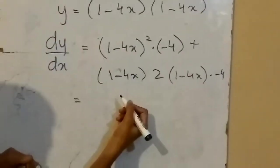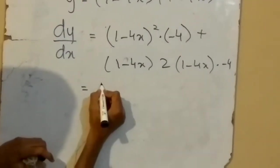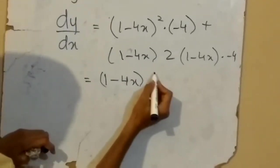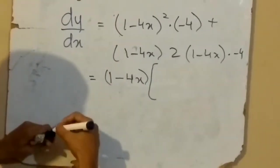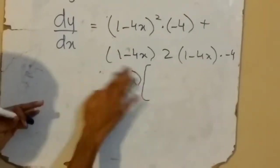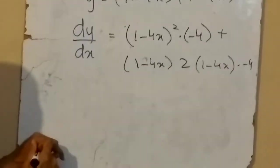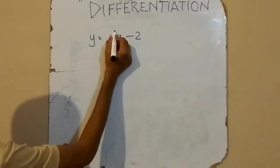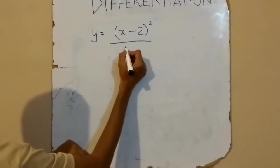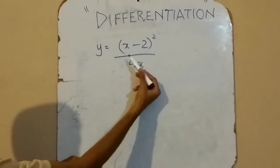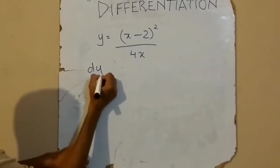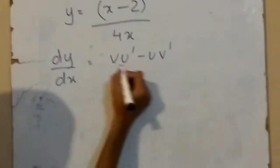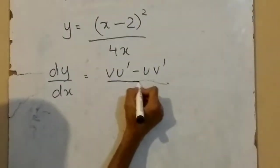If we simplify, we can easily get our answer. We take (1 minus 4x) as a common factor. Now I will show the quotient rule example. The formula for the quotient rule is: (v·u′ minus u·v′) upon v².